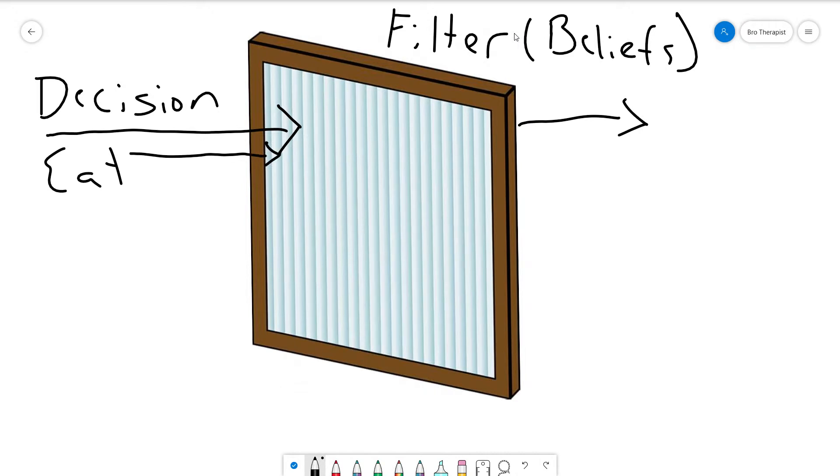Let's say I'm going to make a decision about what I want to eat. It's going to pass through this filter and my beliefs of what I'm going to eat is something that's good for me, obviously with a lot of protein, something that's going to give me the certain number of calories that I'm going for. Ultimately, I'm going to make a decision based on what I believe I should be eating.